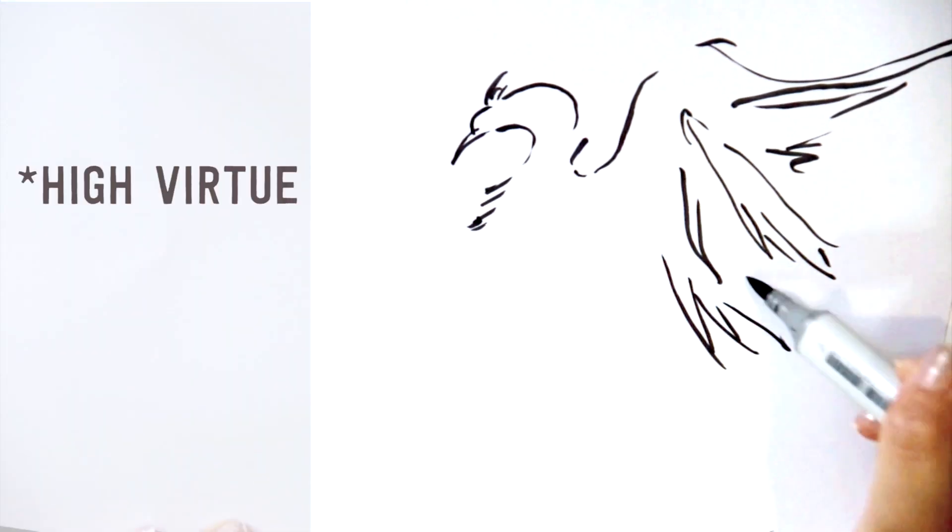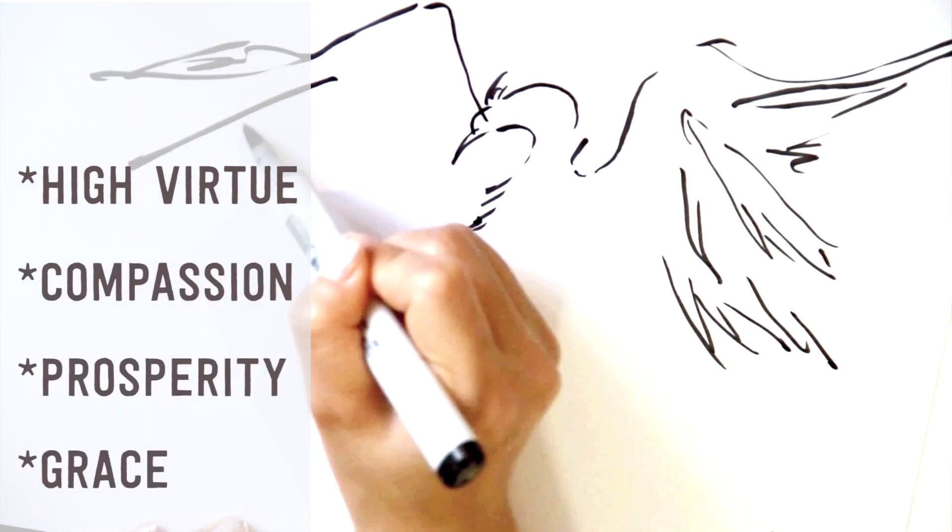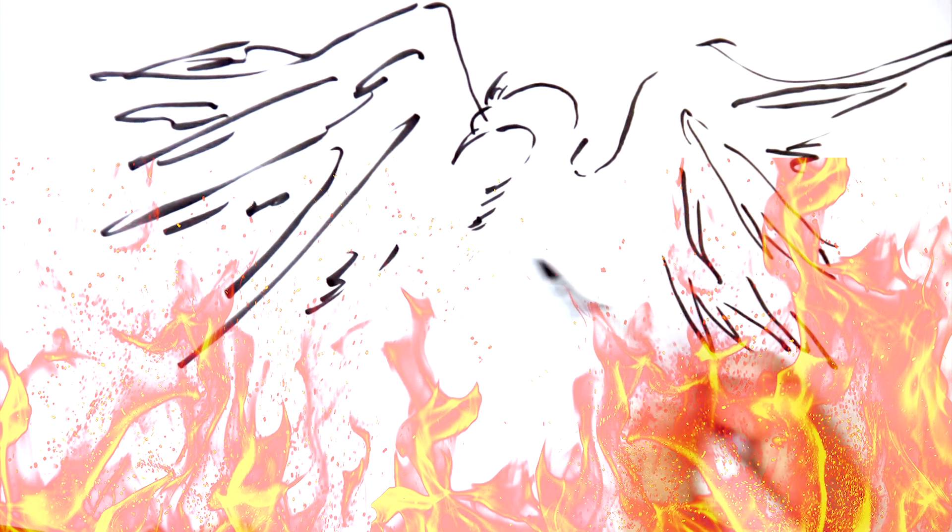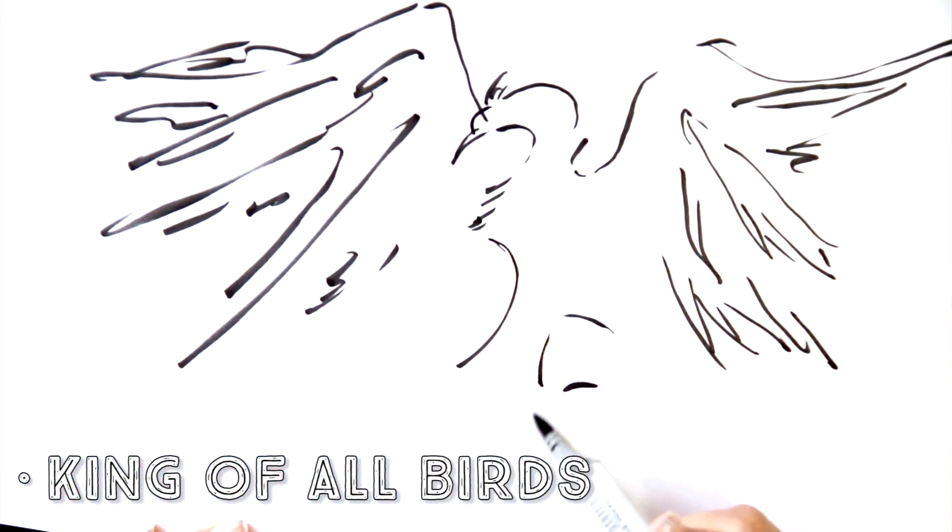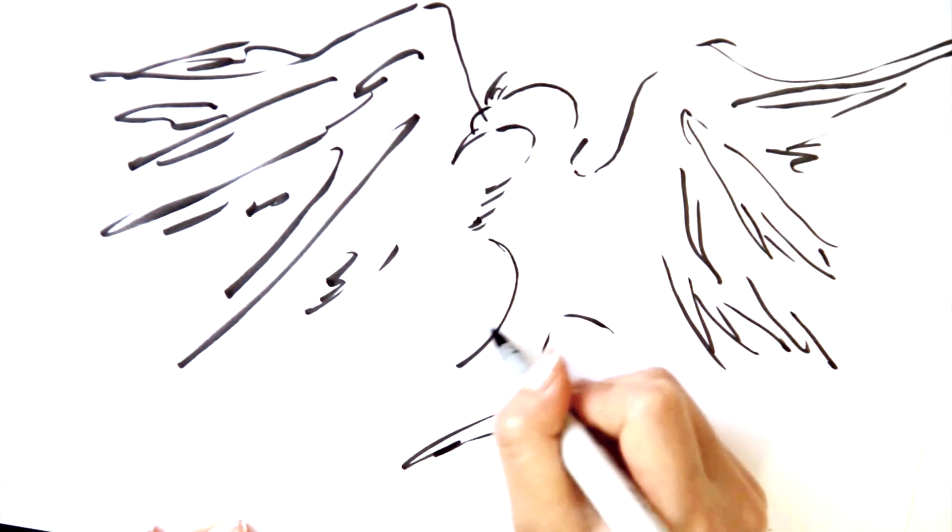It symbolizes high virtue, compassion, prosperity, and grace. Fenghuang is believed to be born out of fire, and is therefore considered the king of all birds. The Phoenix does not tolerate lies or abuse power.